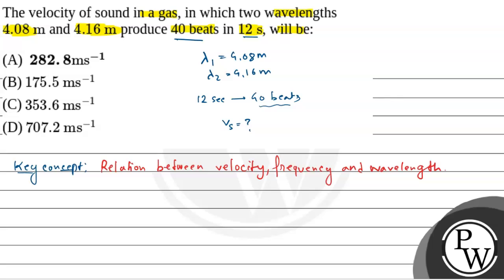The relation between velocity, frequency, and wavelength is V equals n times lambda, where n is frequency and lambda is wavelength.